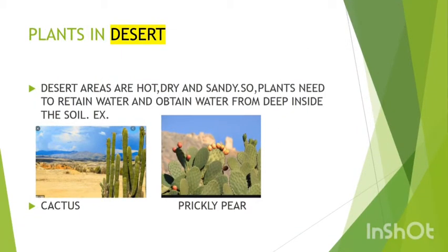Plants in desert. Desert areas are hot, dry, and sandy. So plants need to retain water and obtain water from deep inside the soil. For example, cactus.